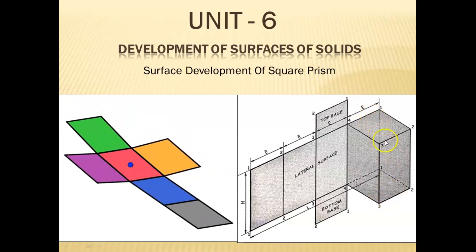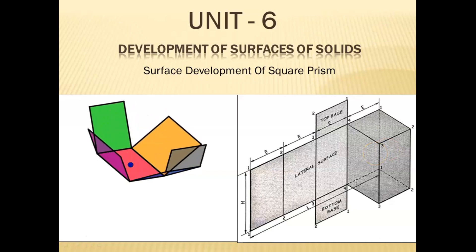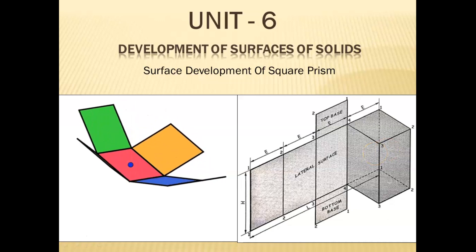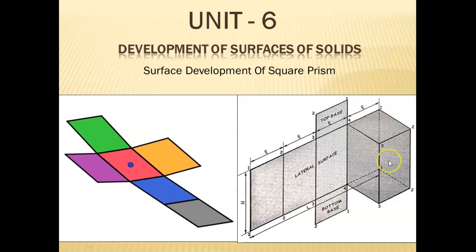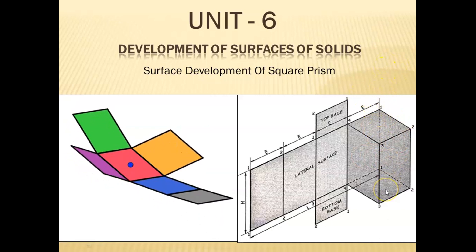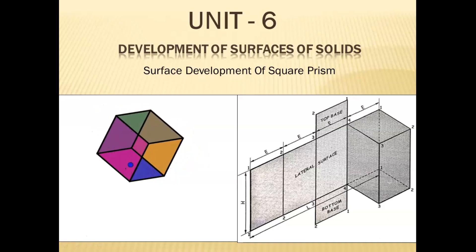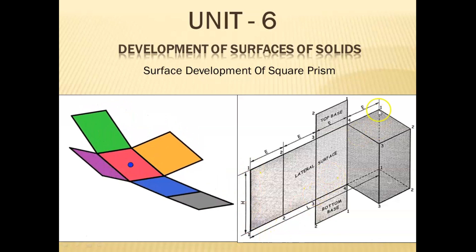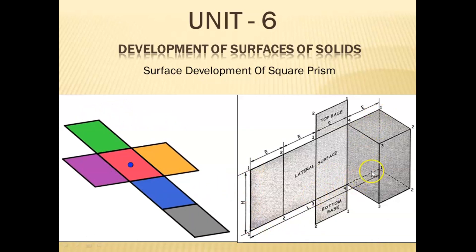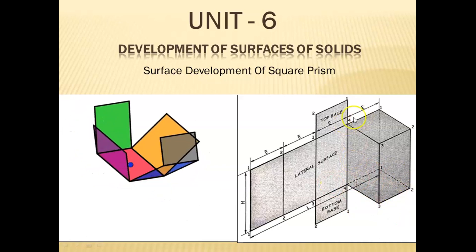A prism is denoted as square prism, pentagonal prism, or hexagonal prism based on the type of polygon used for the top and bottom face. The concept here is: if a square prism with axis height h and edge of base e — these are the base edges of the prism — having a length equal to e.